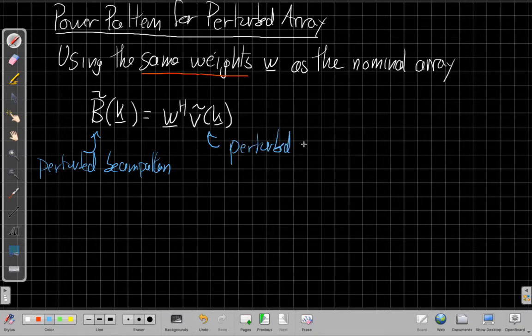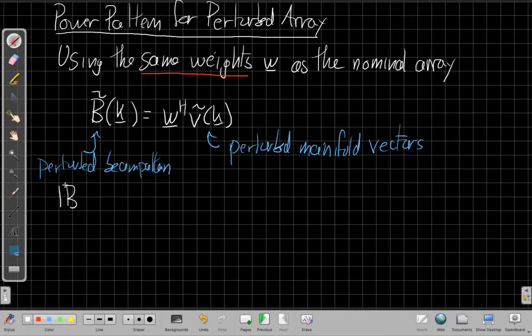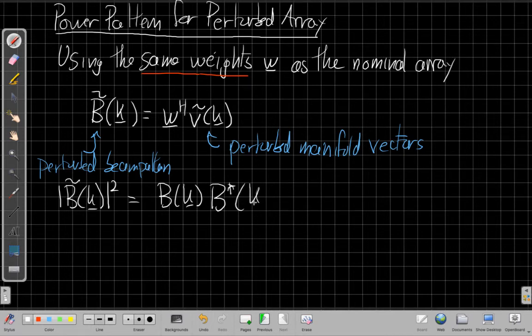It's saying, well, this is what you would really see with the new element positions, the perturbed element positions, if the plane wave coming from direction k hit the true perturbed array that you don't know about the errors in. This is what we'd actually see. That tells us the beam pattern. And we can then go on and say, what's the power pattern as well? The power pattern here would be the magnitude of B tilde squared, which again, we would say is B tilde for the wave vector k times its conjugate.